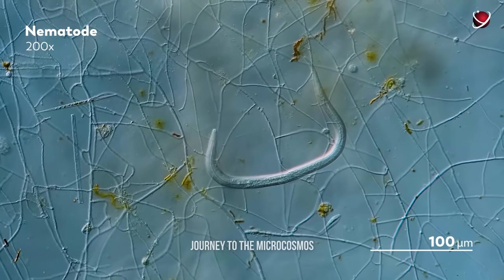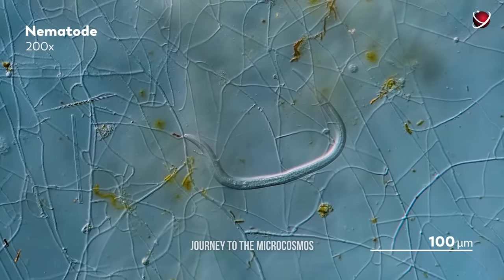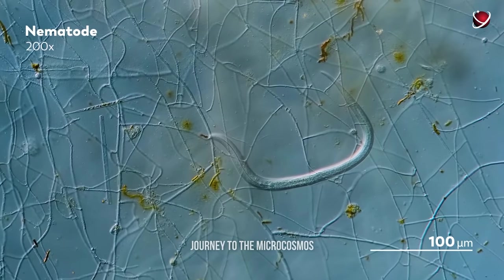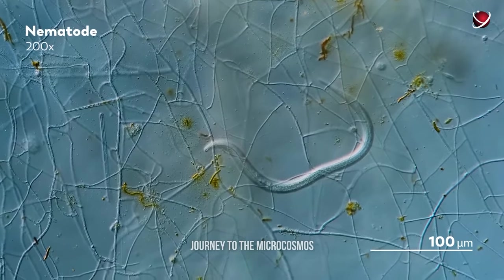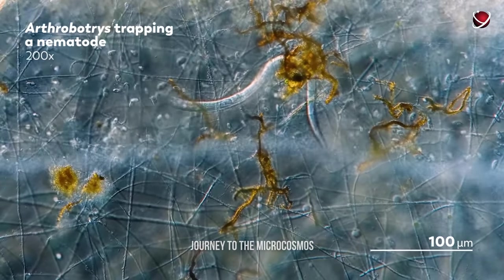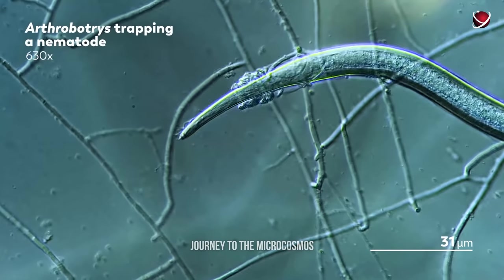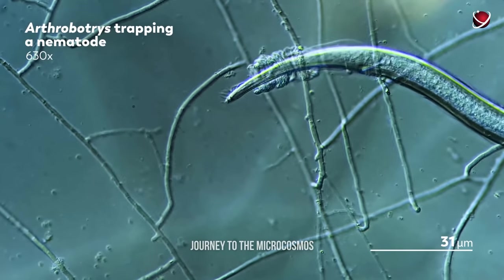And by the way, predatory fungi are a thing. Some types of fungi prey on nematode worms, luring them into a trap. Overall, there are more than 200 such predatory fungi species.